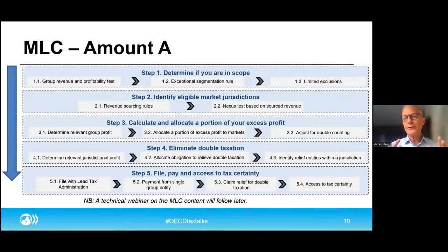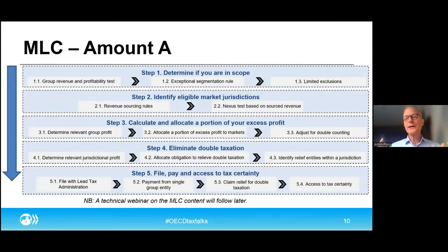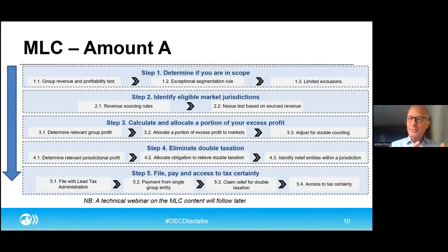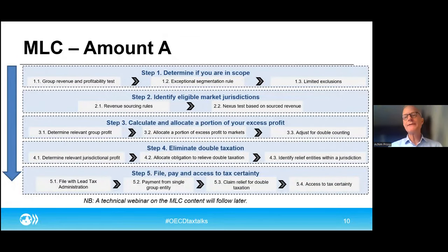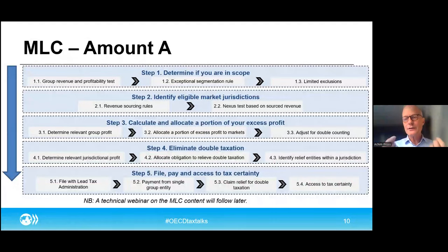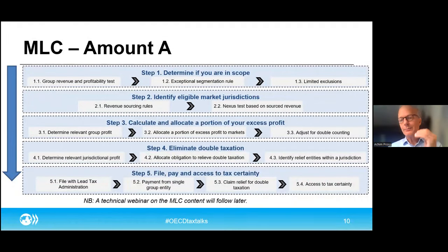So that's my little promotional speech about putting this into context. Now taking you through a bit how this works — this is the so-called Amount A and conceptually as a piece of architecture, it's not complicated. We're essentially saying: if you're very large, if you're very profitable — 20 billion, 10% profit margin — we're going to take 25% in excess of the 10% and allocate it on the basis of sales. So that's a relatively straightforward concept. The first step is you determine the group revenue and the profitability test — 20 billion, 10% averaging so you don't drop in and out constantly.